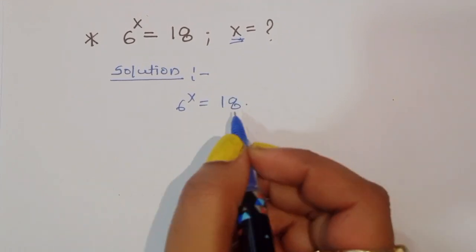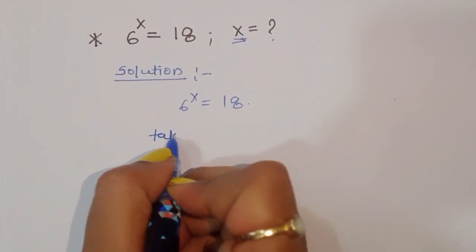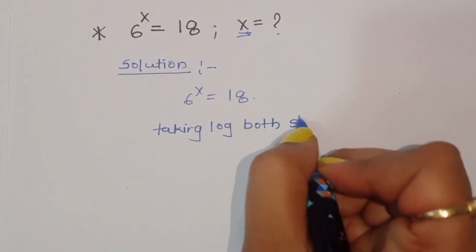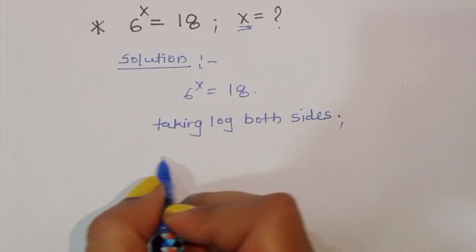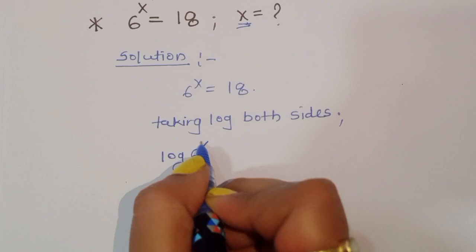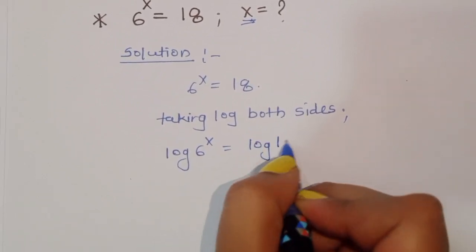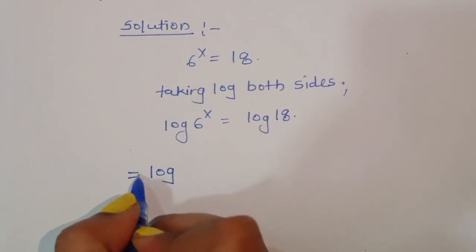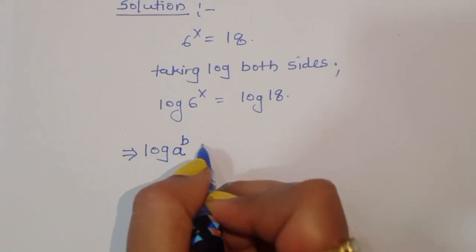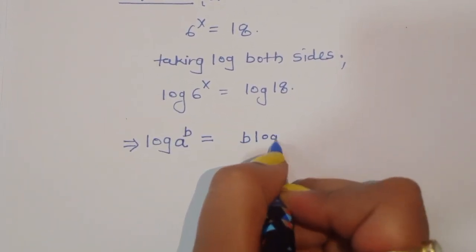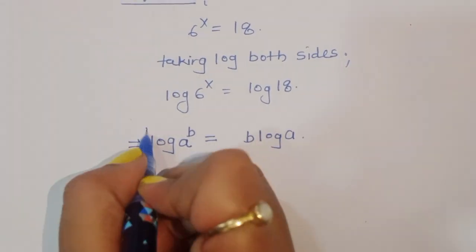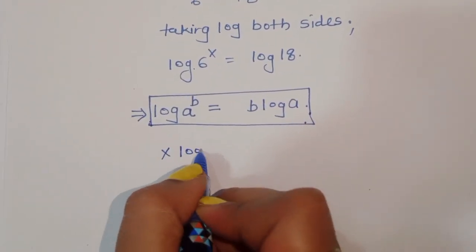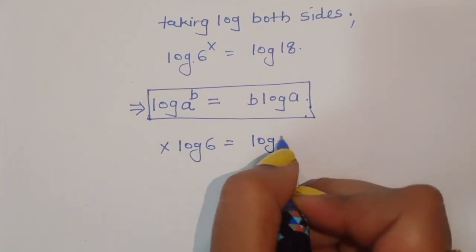One approach is to take log on both sides. Taking log of both sides, we get log of 6 power x is equal to log of 18. Now we know the formula: log of a power b is equal to b times log of a. Using this formula, we can write x times log of 6 is equal to log of 18.